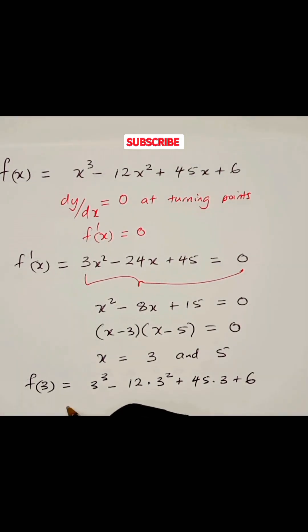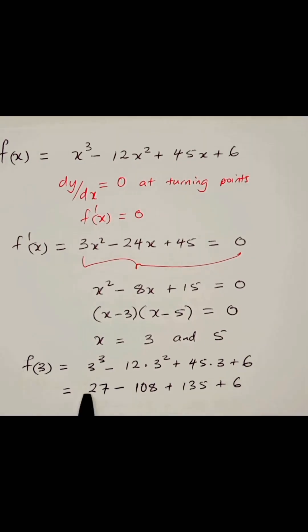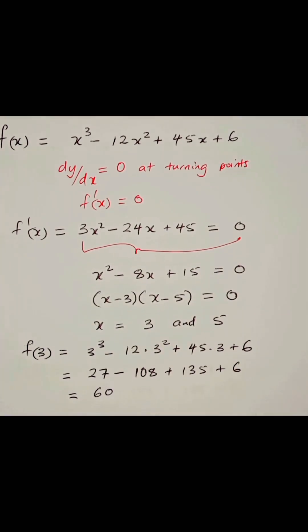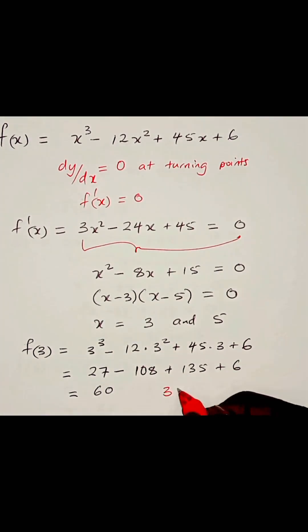And this gives us 27 - 9 times 12, we have 108. 45 times 3, we have 135 plus 6. Now, if you add these up, you shall get 60. So we have one turning point and it is at (3, 60).